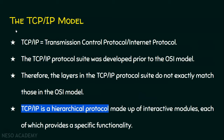Now we will see the TCP/IP model. TCP/IP stands for Transmission Control Protocol and Internet Protocol. The TCP/IP protocol suite was developed prior to the OSI model, so the layers in the TCP/IP protocol suite do not exactly match those in the OSI model. TCP/IP is a hierarchical protocol made of interactive modules, and each module provides a specific functionality. For any communication in a computer network, we need IP address, MAC address, and port addressing. Each layer takes care of one of these — one layer handles port addressing, another handles IP addressing, and another handles MAC addressing.